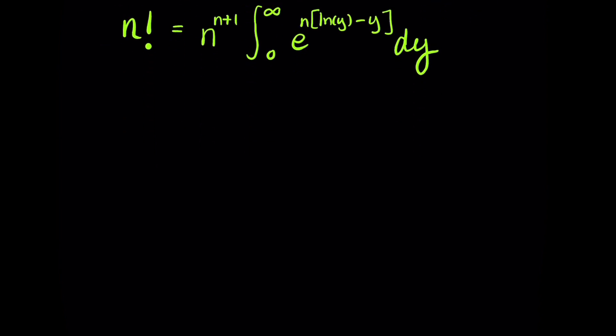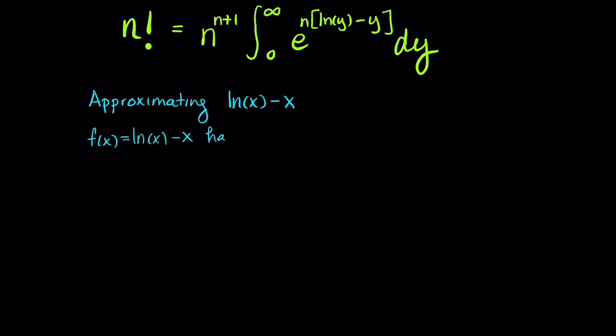Now our estimation comes into play. We examine the function natural log of x minus x, which is the exponent in our integrand. As a function, it has a maximum value at x equals 1 and then decreases, dropping off on either side of x equals 1.